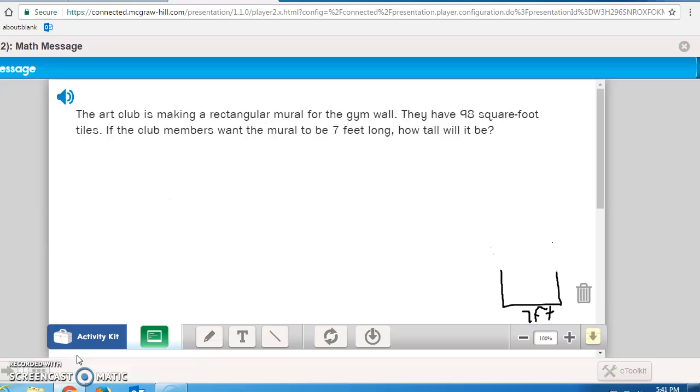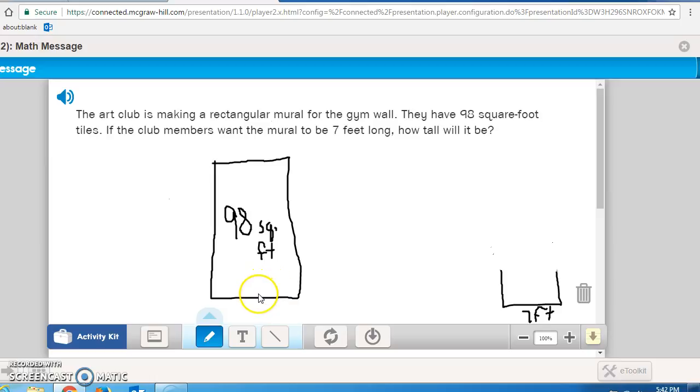So, read this problem to yourself as I read it out loud. It asks, or states, The art club is making a rectangular mural for the gym wall. They have 98 square foot tiles. If the club members want the mural to be seven feet long, how tall will it be? And this is how you would explain your answer. Let's start first with what we know. The mural is a rectangle. So right away, I'm going to draw that to make sure that I know what I'm looking at. A rectangle. And I know its area is 98 square feet. So I know the area, the inside measurement, is 98 square feet. And I also know that the length is 7 feet. So my length here is 7 feet.